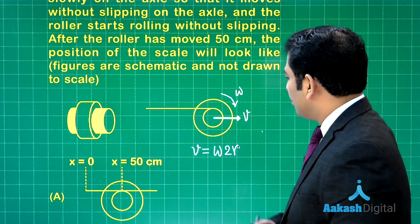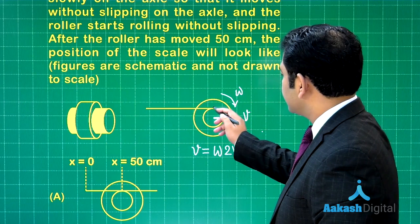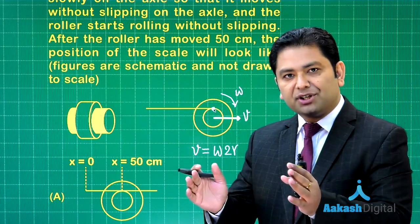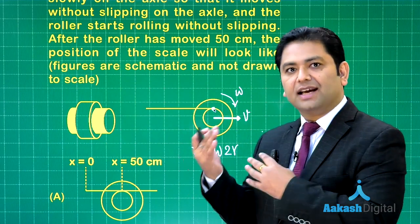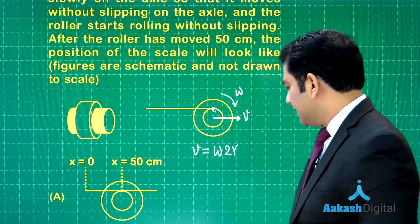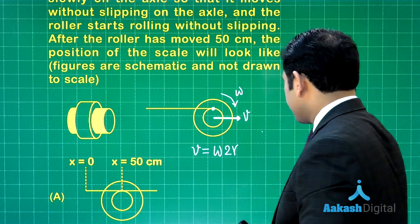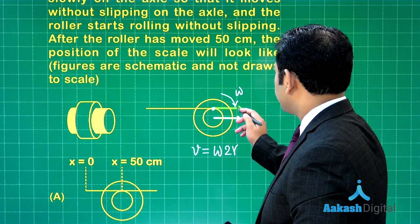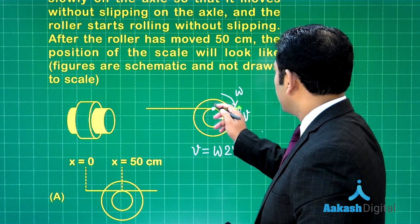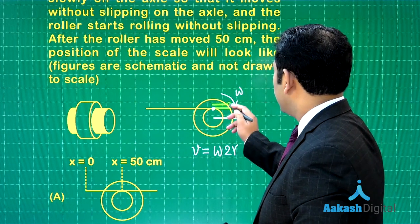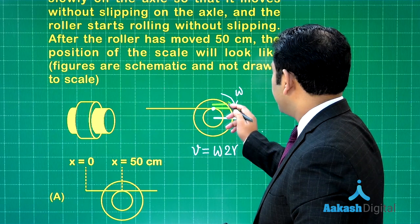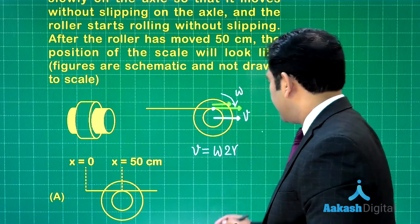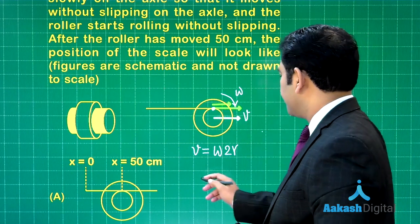Now let us see what would be the resultant velocity of this particular point. The resultant velocity would be summation of the translation and rotation. So let me add the translation part and the rotation part. The translation part would of course be V, and the rotational part would be omega times R.